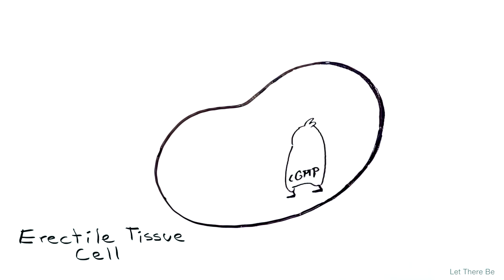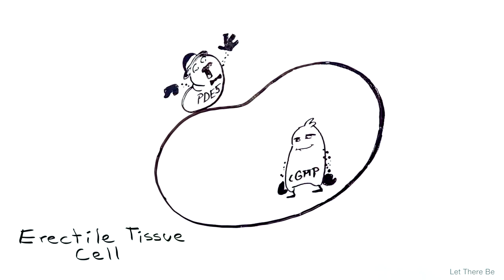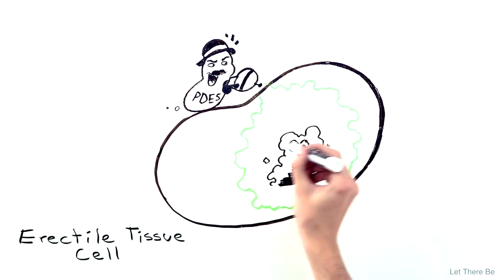As part of the normal erection process, an enzyme in erectile tissue called phosphodiesterase type 5, or PDE5, breaks down cyclic GMP.